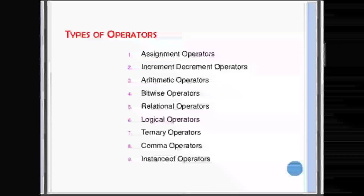As you can see on the screen, in types of operators we have discussed assignments, increment/decrement, arithmetic operators, and relational and logical operators in previous videos. Three topics remain: bitwise, ternary, comma, and instanceof operator. Let's finish those today. This operators chapter has 3-4 videos — you can watch them as part 1 and part 2. Study this chapter very well because it is very important for your boards and will always help you in every exam in 9th grade.